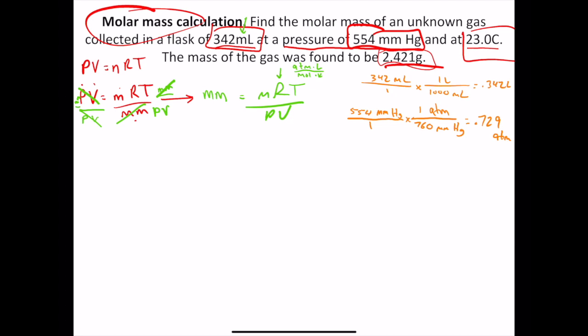Okay. One more conversion to do. This one's an easy one. We have 23.0 Celsius. We need to add 273 to it. So we get 296 Kelvin. And now we have everything I think so we can plug it in.